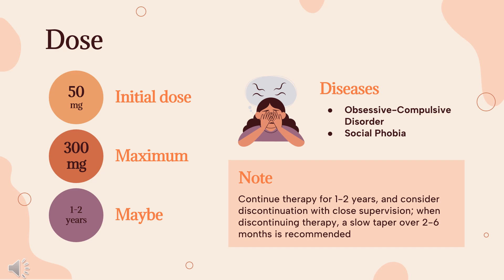Dosing considerations: Continue therapy for 1–2 years and consider discontinuation with close supervision. When discontinuing therapy, a slow taper over 2–6 months is recommended. Post-traumatic stress disorder (off-label): 50 mg/day PO initially; may increase dose to 100–250 mg in adults and 100 mg in older adults, not to exceed 300 mg per day.